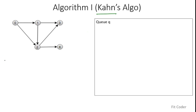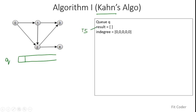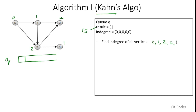Kahn's algorithm works on a queue data structure. We also have a result array where we will store the topological sort, and an indegree array. Indegree is the number of edges incident to a vertex, and we initialize the indegree of all vertices to zero. The first step is to find the indegree of all vertices. For vertex 0 there is no incident edge, so indegree is 0. For vertex 1, one edge; vertex 3, two edges; vertex 2, two edges; and vertex 4, one edge. So the indegree array becomes 0, 1, 2, 2, 1.